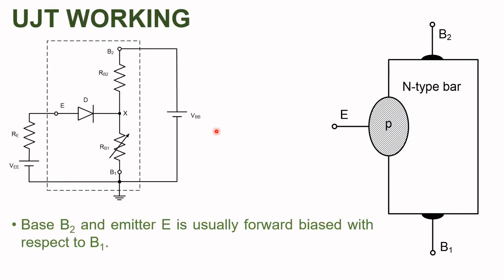Now let us see the working of UJT. Before starting, let us first see the biasing of UJT. Usually, terminal B2 (base 2) is maintained at a voltage higher than that of base 1, and the emitter is always forward biased with respect to base 1 in order to make the UJT conduct. The voltage VBB is used for making base 2 at a higher voltage than base 1, and supply VEE is used for forward biasing the emitter. Resistance RE acts as the current limiting resistance for the emitter.